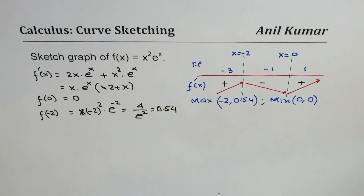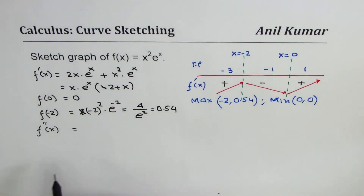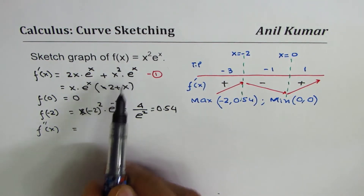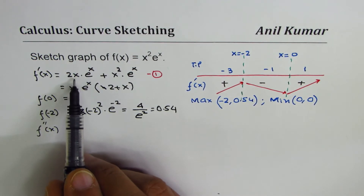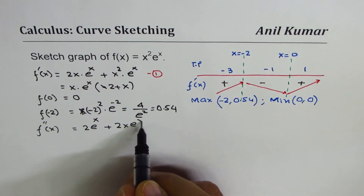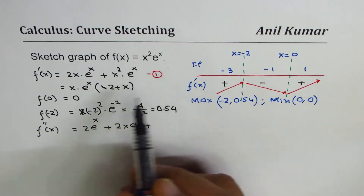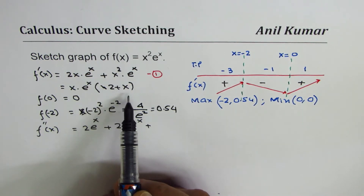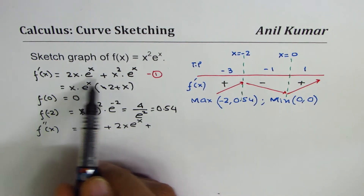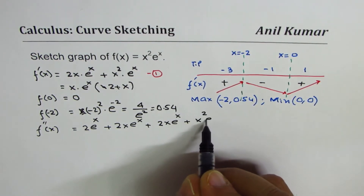Now let's find the second derivative of the given expression. We apply the product rule to equation 1. The derivative of 2x is 2, so we get 2eˣ plus 2x · eˣ plus x² · eˣ. We already found that the first derivative was x · eˣ · (2 + x), and now expanding we have 2eˣ plus 2x · eˣ plus x² · eˣ.